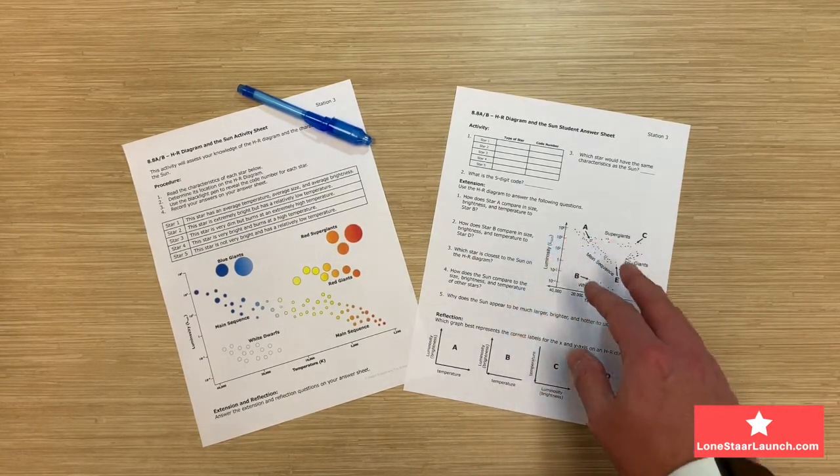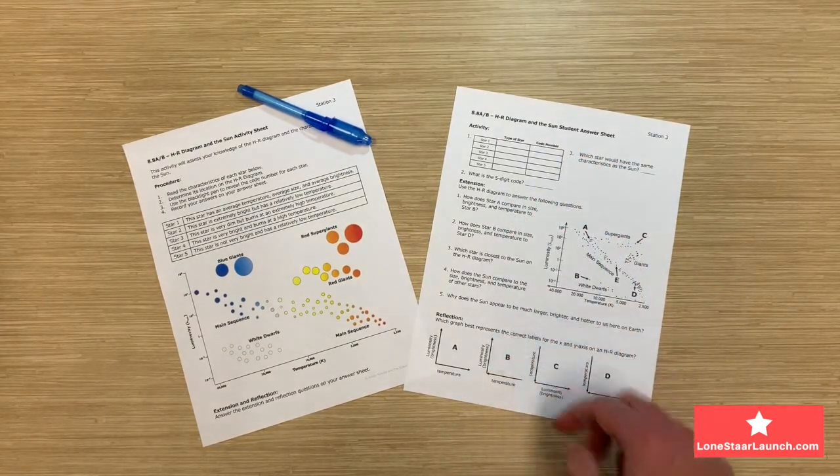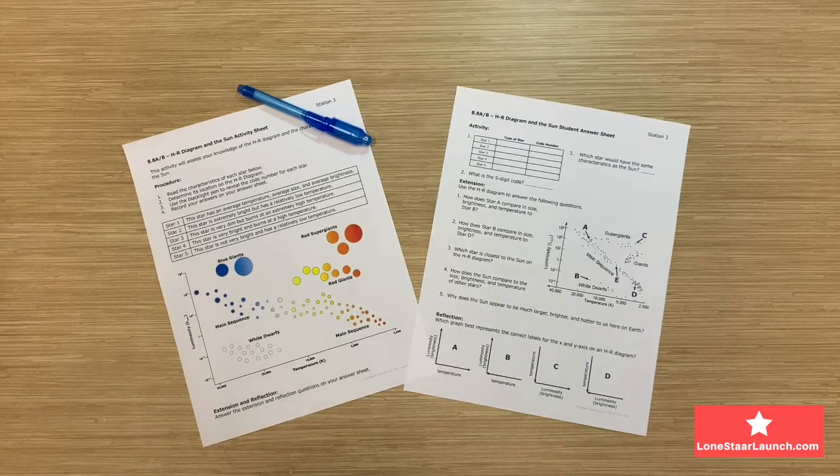On the right-hand side, you will see the student answer sheet that contains the activity, extension, and reflection sections. This will travel with each student as the stations are completed.